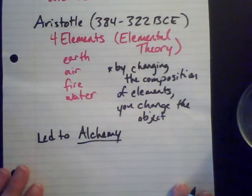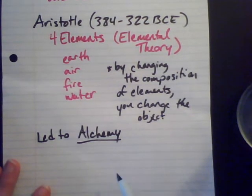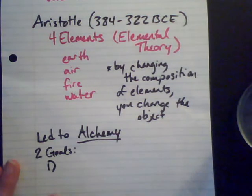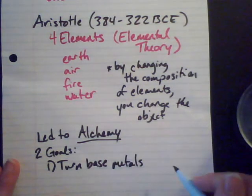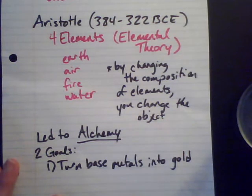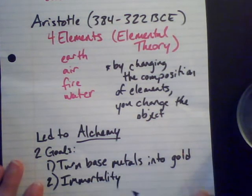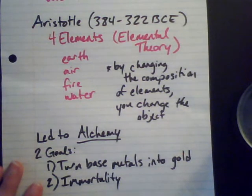The alchemists were interested in two goals. First, they wanted to turn base metals into gold — sometimes you'll think about alchemists as changing lead into gold. And the second goal was making an immortality potion, finding something that would give immortality. There were a couple different ways they wanted to go about doing this, and alchemists really led to the modern chemists in a couple of different ways.